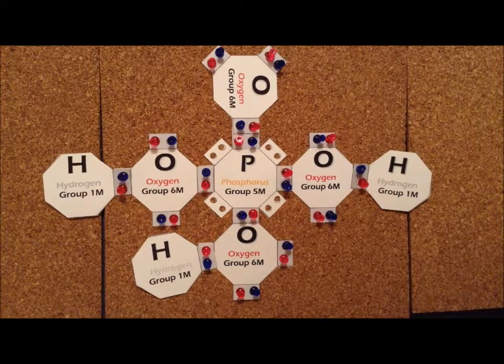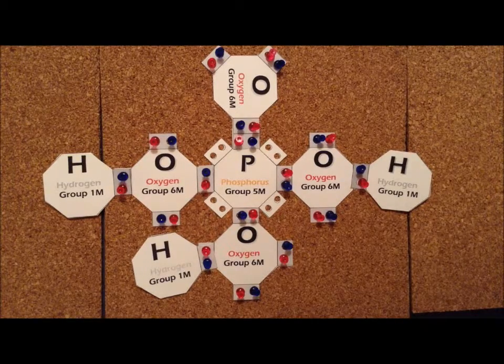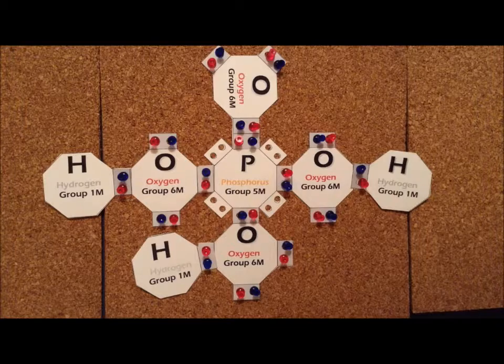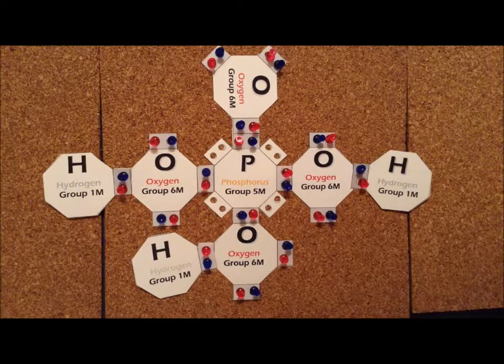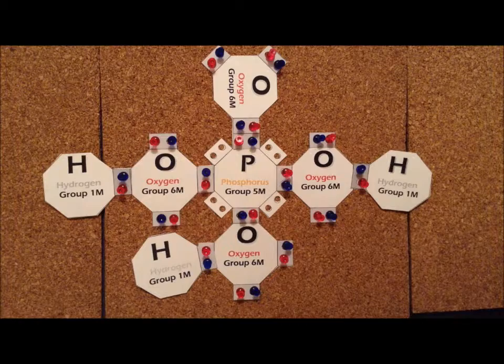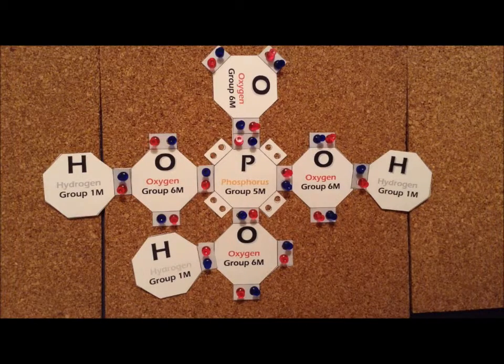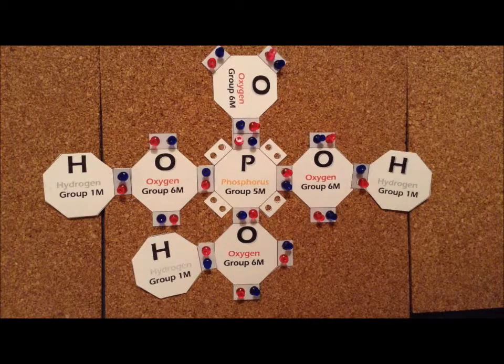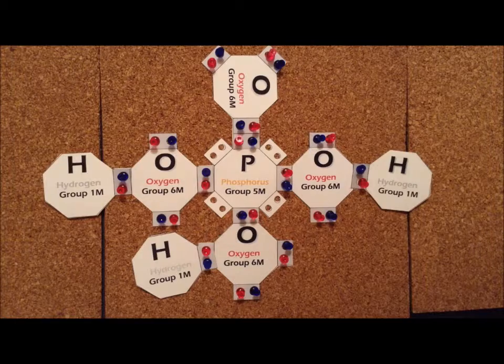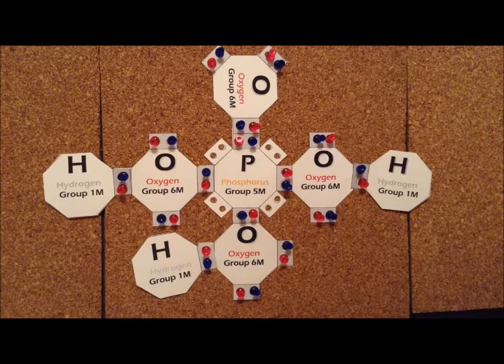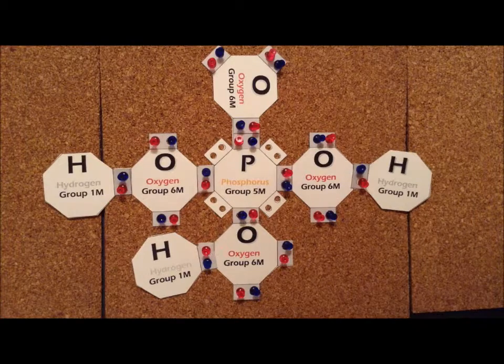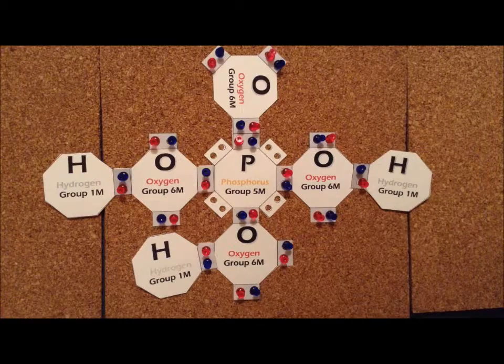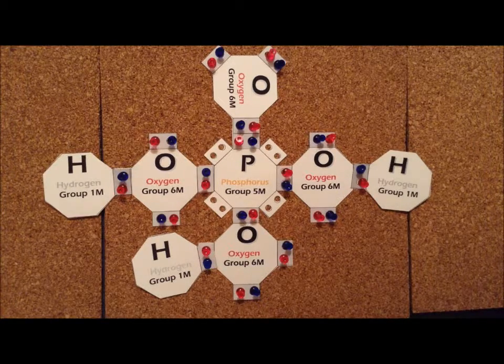One of the most important compounds containing phosphorus is phosphoric acid, which has the chemical formula H3PO4. To design the Lewis structure for this particular compound, we note that there are four oxygen atoms, each of which contributes six valence electrons. So, that gives 24 electrons. The phosphorus contributes five electrons. That gets us up to 29. There are three hydrogens, each of which contributes one electron, for a grand total of 32 electrons.